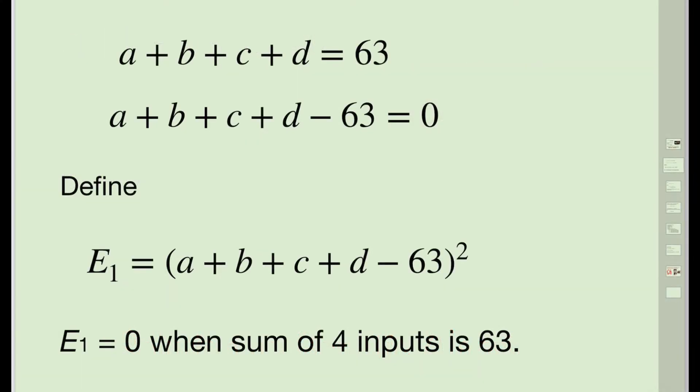From the condition given, a + b + c + d must equal 63. Let's move 63 from the right-hand side to the left-hand side, so we obtain a + b + c + d - 63 = 0. Let's define E1, the error function one, equals (a + b + c + d - 63)². This is to ensure that the minimum error is zero when the sum of four values equals 63, the minimum error equals zero.